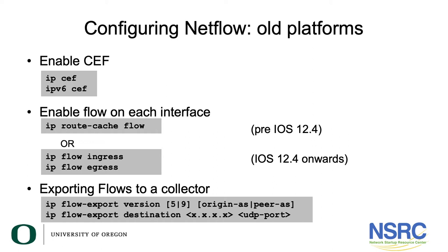For platforms prior to IOS 12.4, we turned on NetFlow by doing 'ip route-cache flow' on the interface, and this only applied to incoming traffic — there was no way of capturing flows for outgoing traffic. For more modern versions of IOS, 12.4 onwards, we can do 'ip flow ingress' for incoming traffic and 'ip flow egress' for outgoing traffic.